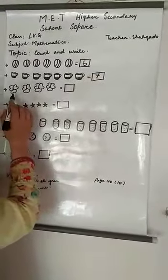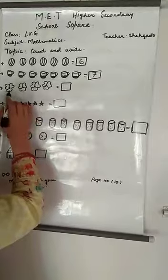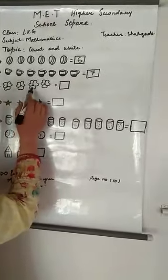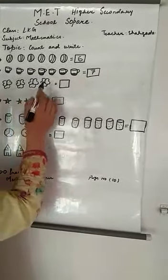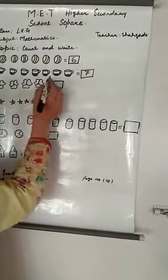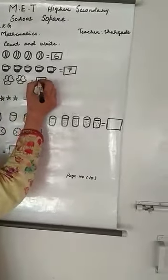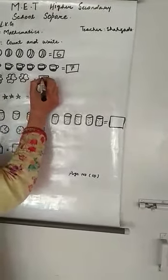Now flowers हैं: one, two, three, four. Is equal to आएगा — four.